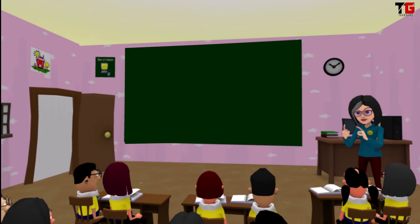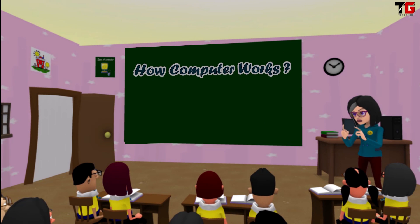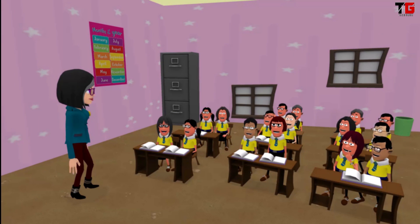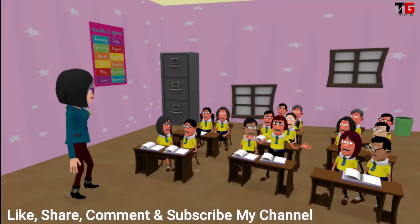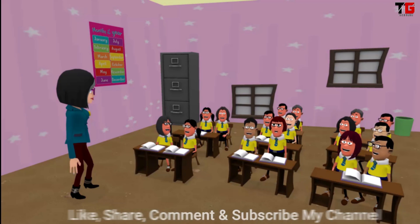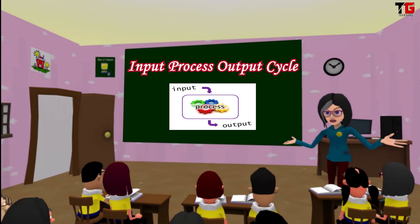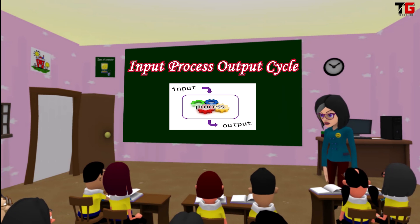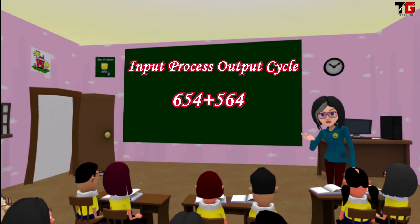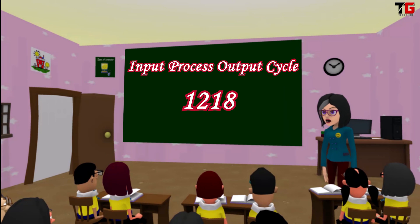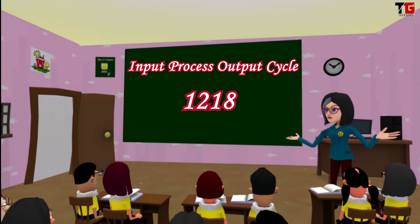First of all, tell me, do you know how a computer works? Ma'am, computer works on input, process and output cycle. You are right, computer works on input, process, output cycle. First of all, we give some input, computer processes the input and then gives the output.